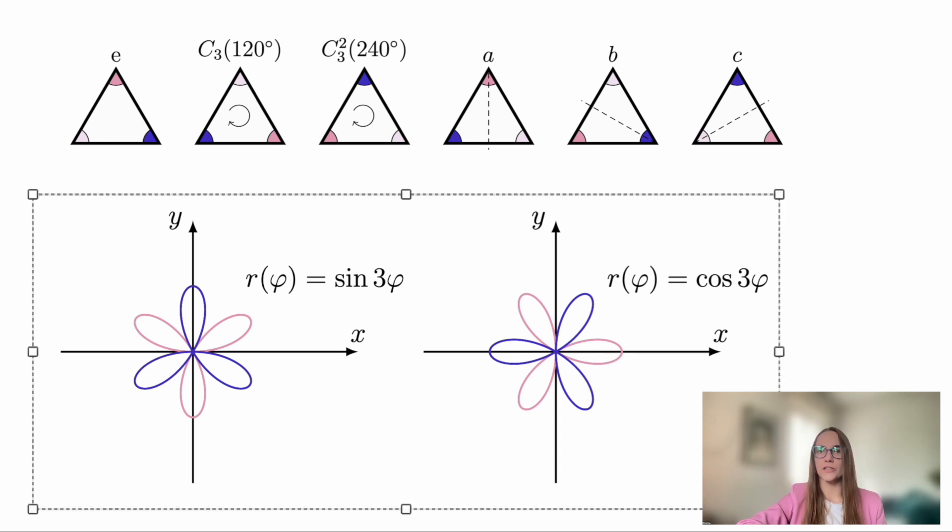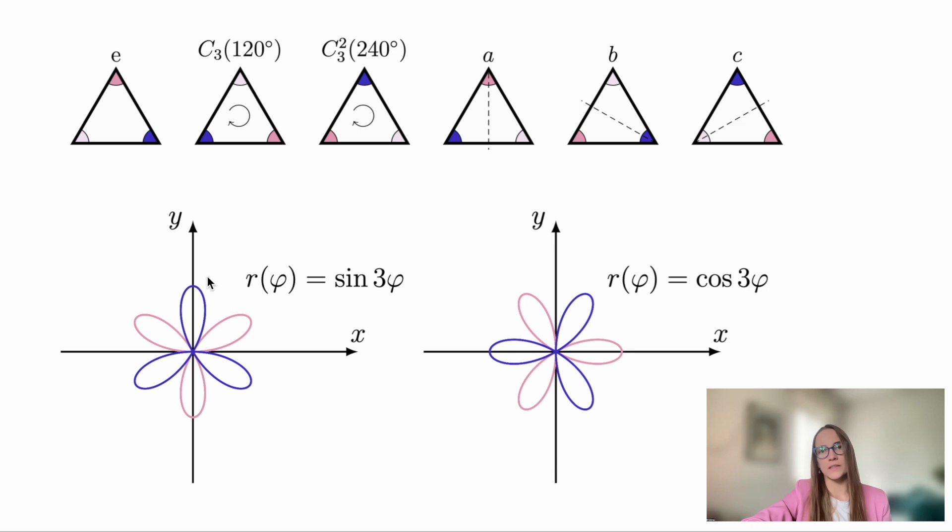Let's look at how the functions sine of triple angle and cosine of triple angle behave. Of course, we could rewrite them in Cartesian coordinates and perform the same substitution, replacing x and y with the rotated versions and so on, but it's much simpler to just look at the pictures and see what happens. For example, this function does not change at all under 120-degree rotation nor under 240-degree rotation.